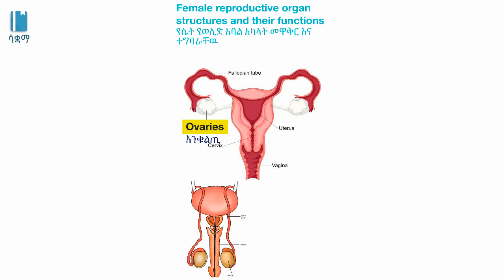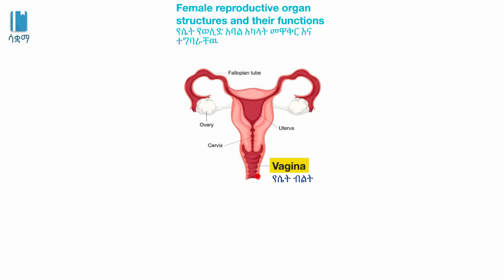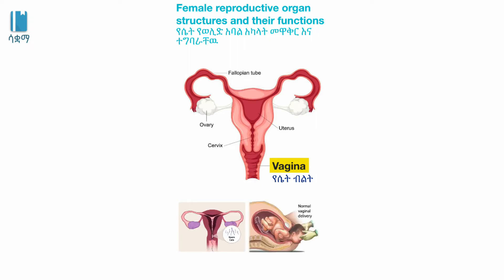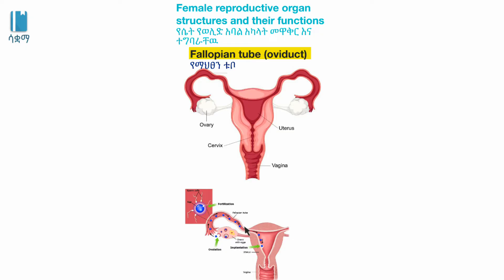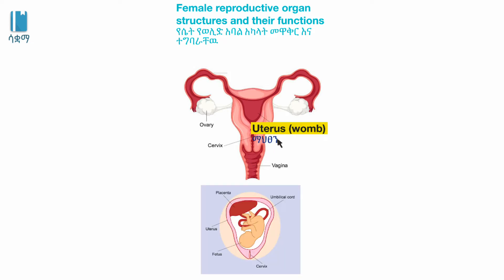The vagina receives the penis during sexual intercourse. It also serves as a birth canal. The fallopian tube connects the ovaries with the uterus.